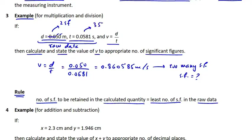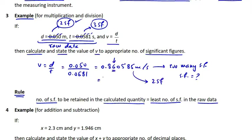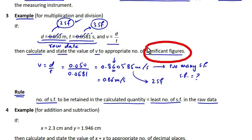t has three significant figures: 5, 8, and 1 — the zeros are non-significant. In the raw data, d has the least number of significant figures, which is two. So according to the rule, the calculated value of v should be rounded off to two significant figures, giving 0.86 meters per second. This is how we round off a calculated value to the appropriate number of significant figures when the value is obtained by multiplication or division.